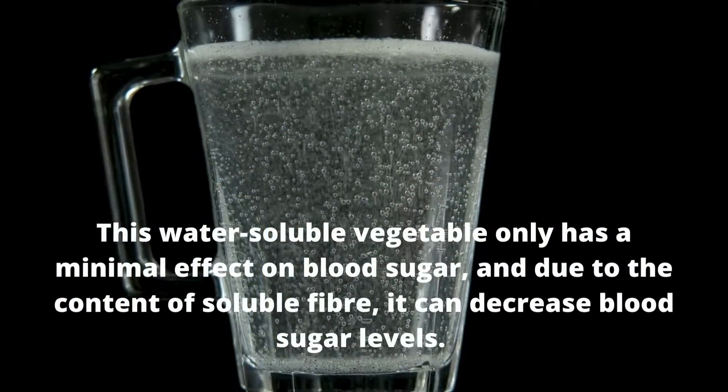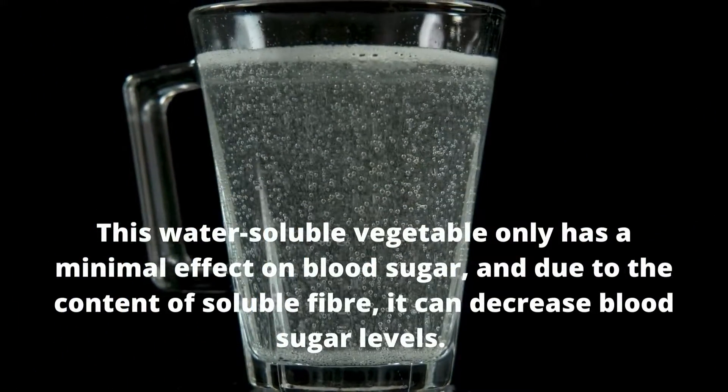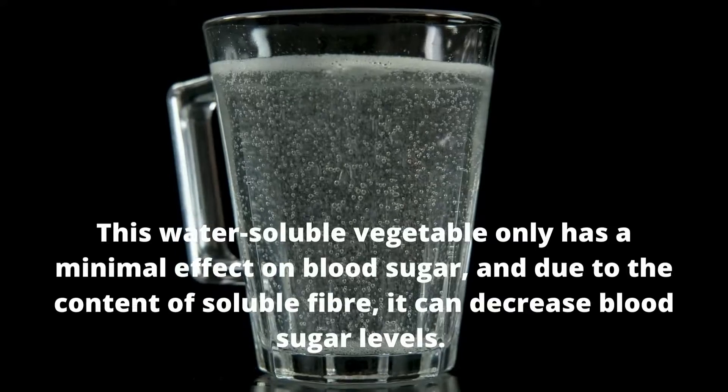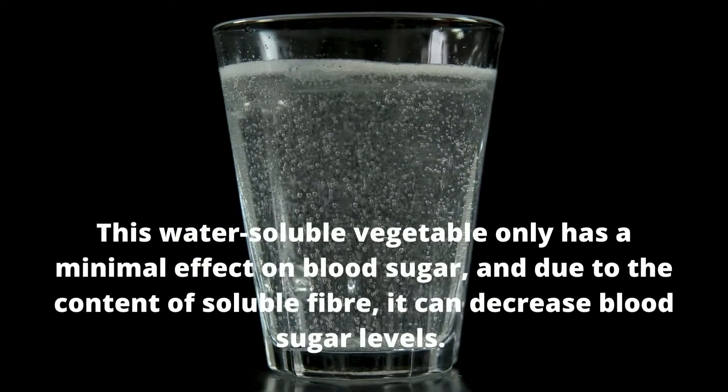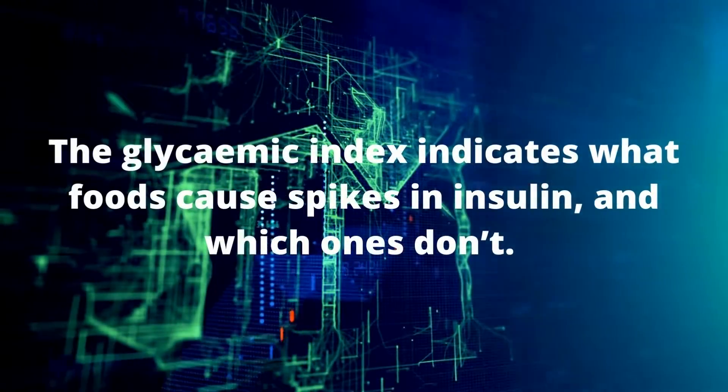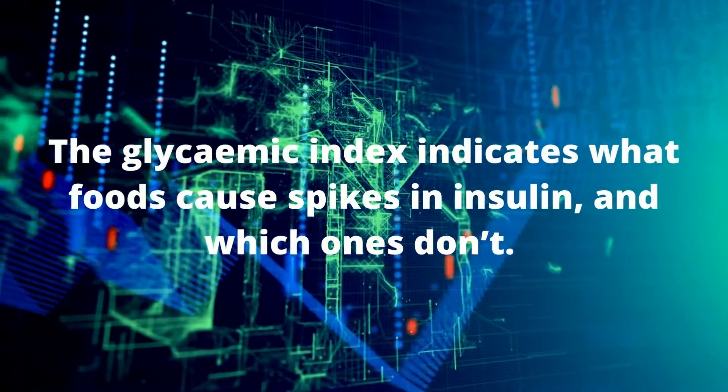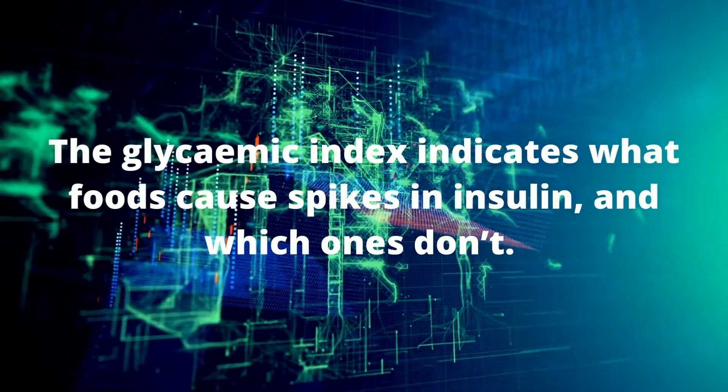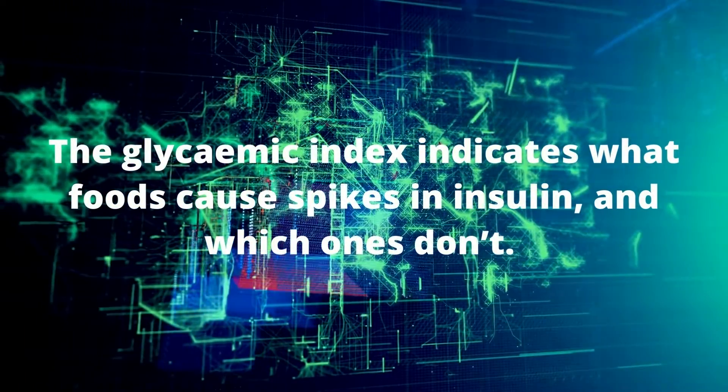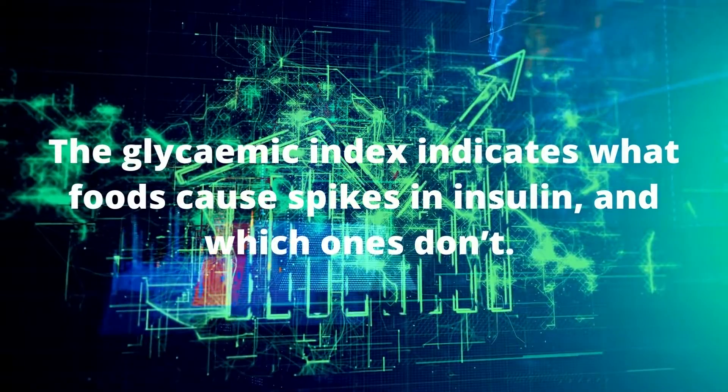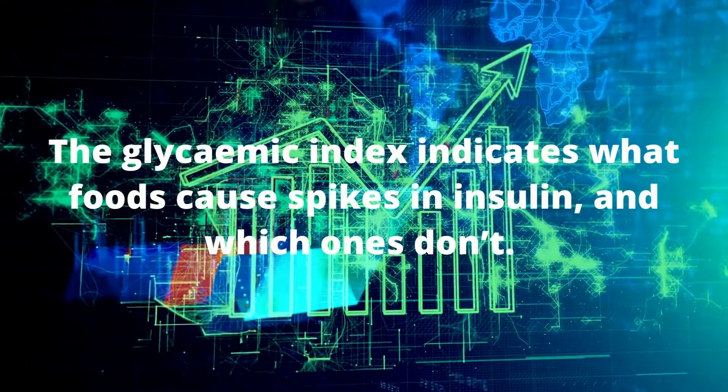This water-soluble vegetable only has a minimal effect on blood sugar. And due to the content of soluble fiber, it can actually decrease blood sugar levels. Spinach is also a low glycemic food. The glycemic index indicates what foods cause spikes in insulin and which ones don't. Foods that feature on the low glycemic index do not cause spikes in insulin.